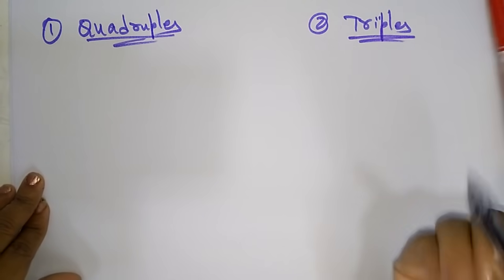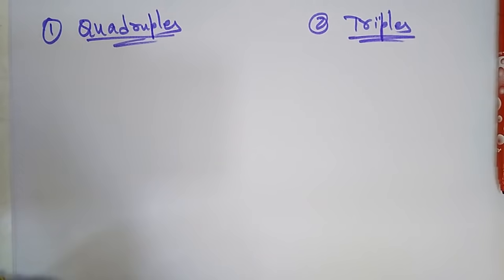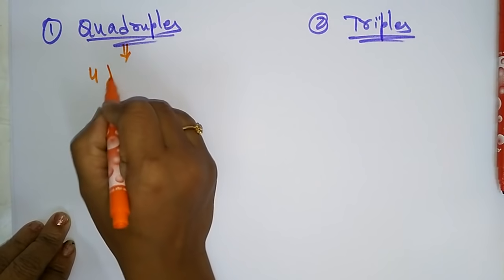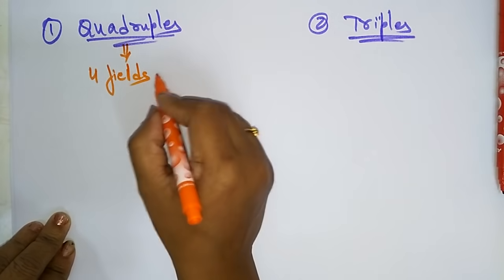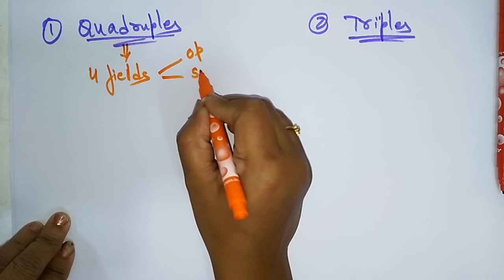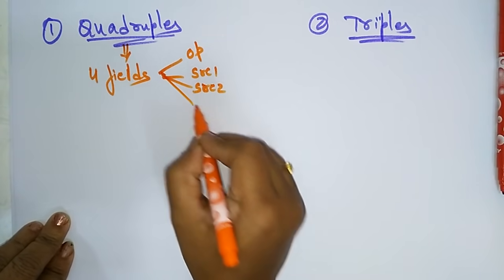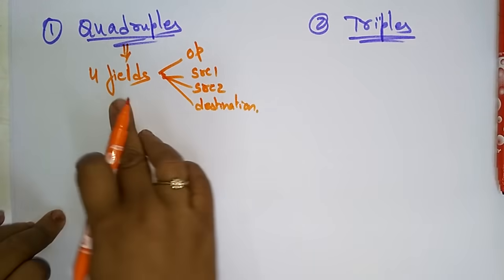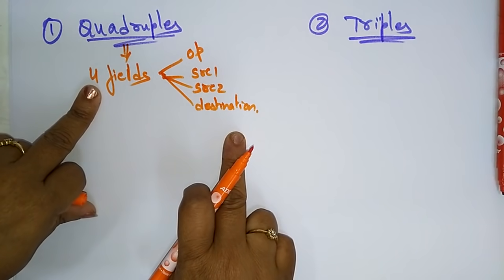Quadruples has four fields — remember, 'quad' means four. The four fields are: operator, source one, source two, and destination, which is the result.